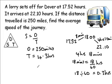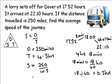We're now able to carry out the substitution. Speed equals distance over time, which is 250 over 4.3. Carrying out the division, 250 divided by 4.3 to the nearest whole number gives 58. The unit for distance in the question is miles and the unit for time is hours, so the unit for speed is miles per hour.